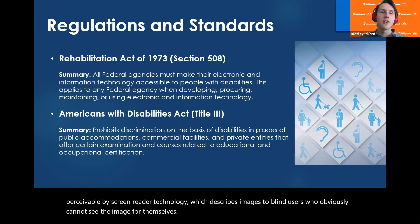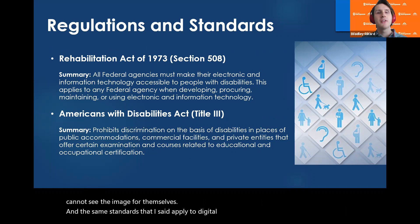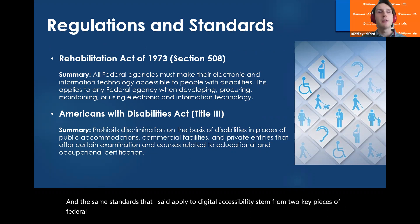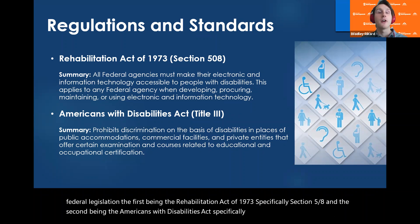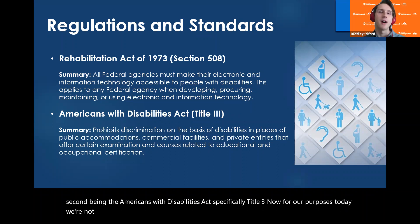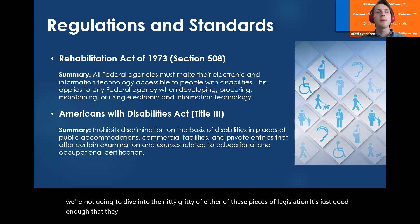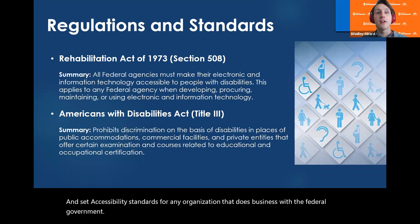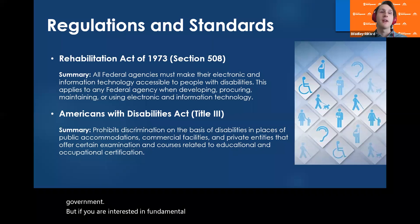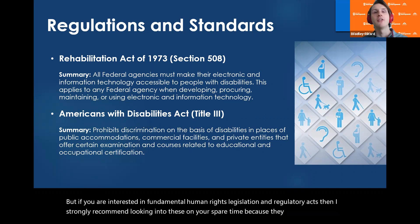The standards for digital accessibility stem from two key pieces of federal legislation: the first being the Rehabilitation Act of 1973, specifically Section 508, and the second being the Americans with Disabilities Act, specifically Title III. For our purposes today, we're not going to dive into the nitty-gritty of either piece of legislation — it's just good enough that you know they exist, that they prohibit discrimination on the basis of disability, and that they set accessibility standards for any organization that does business with the federal government.